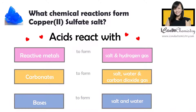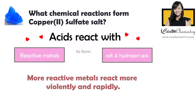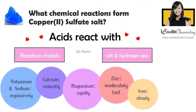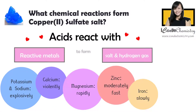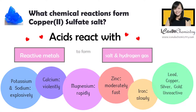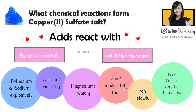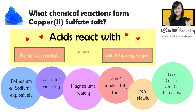Now let's check each of the possibilities. Acid reacts with reactive metals — the key word here is reactive. Different metals react with acids at different rates. Some metals are very reactive and the reaction is very vigorous and fast, while some metals are not so reactive or even unreactive. The metals that do not react with dilute sulfuric acid in the school chemistry lab are lead, copper, silver, and gold. Hence, to form copper 2 sulfate salts in the lab, we can't use this method because copper metal is unreactive with dilute sulfuric acid.